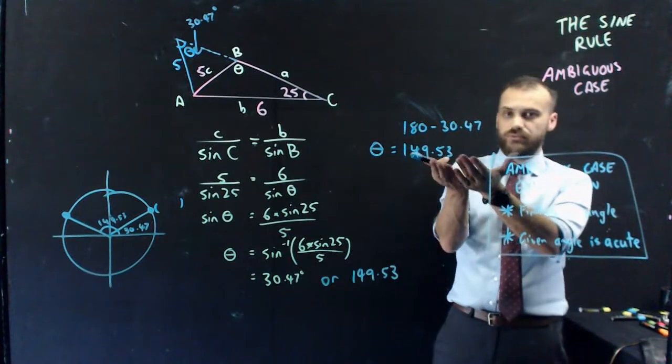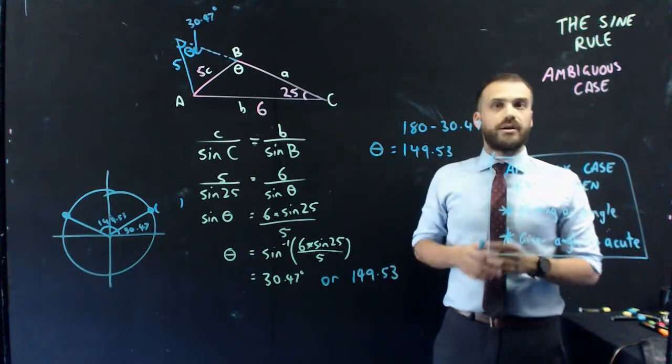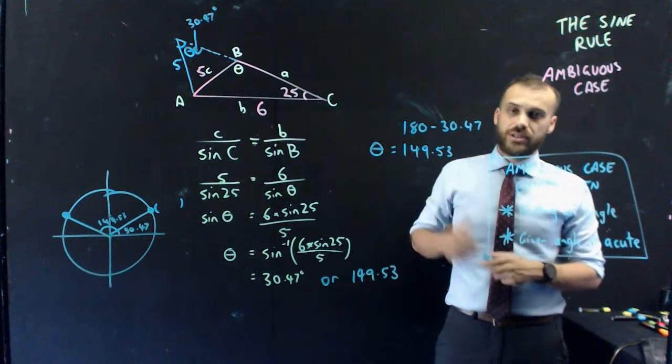Pretty simple to figure it out once you've got one answer. That's the sine rule. That's the ambiguous case. That's all you need to know.